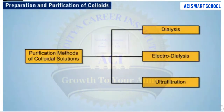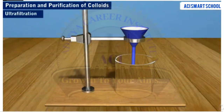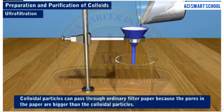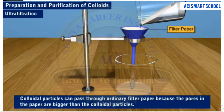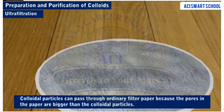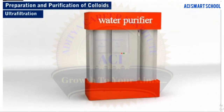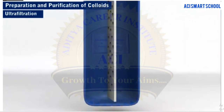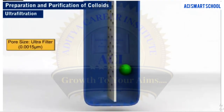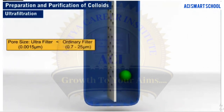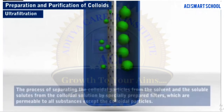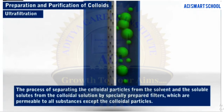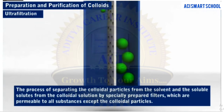Let us now discuss the third method for the purification of colloids: ultrafiltration. It is important to note that colloidal particles can pass through ordinary filter paper because the pores in the filter paper are bigger than the colloidal particles. The separation of a solute from a colloidal system can be carried out by using an ultrafilter, which has smaller pores than an ordinary filter. Ultrafiltration is defined as the process of separating colloidal particles from the solvent and the soluble solutes from the colloidal solution by specially prepared filters, which are permeable to all substances except the colloidal particles.